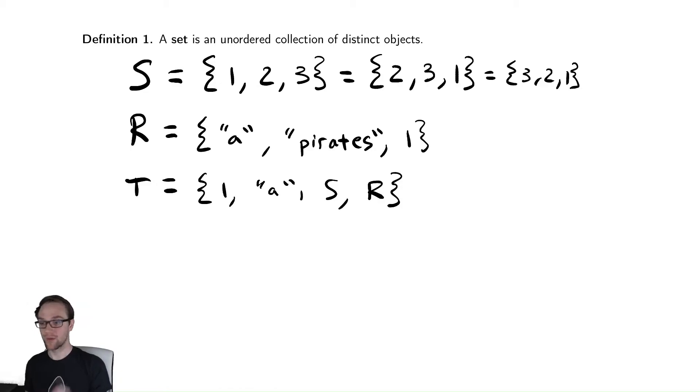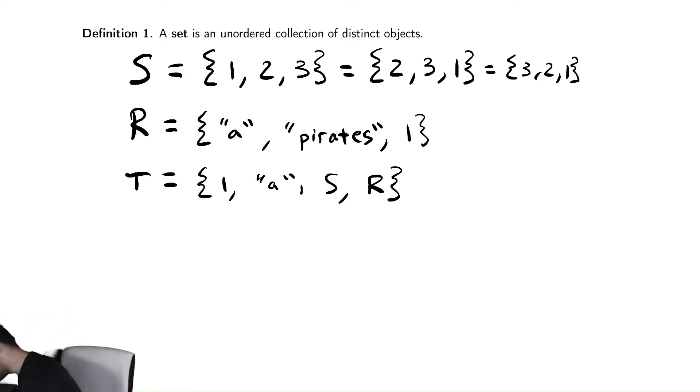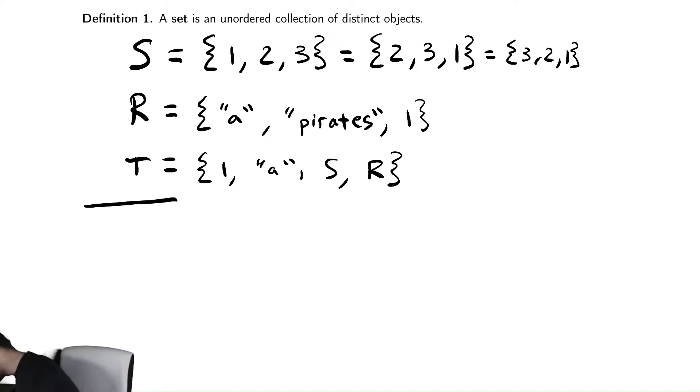We'll talk about those ways later. But for now, we'll say that a set is a collection of distinct objects and that we can list out the elements. There are other ways that you can denote a set. So for example,